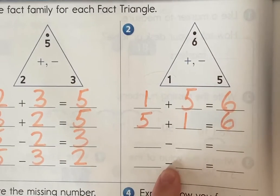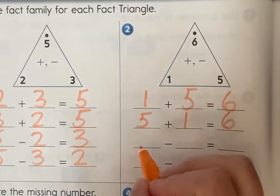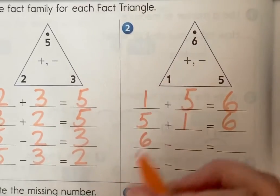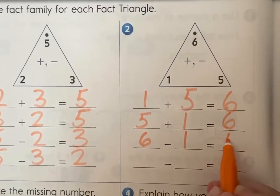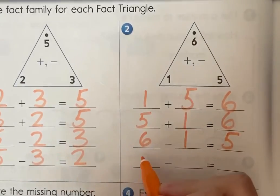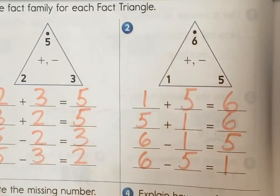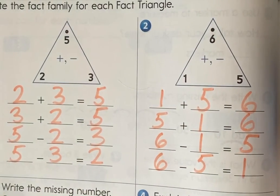Now here I see our minuses. We need to do subtraction and when we do subtraction we always start with the biggest number and that is six. Six minus one equals five. Since I already did six minus one now I go the other way. Six minus five equals one. And that is how we use a fact family triangle.